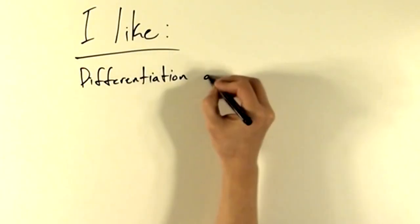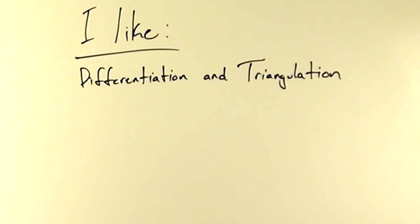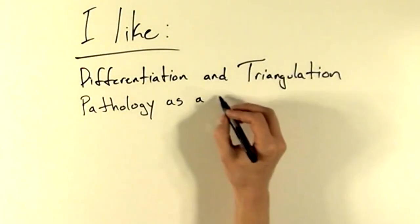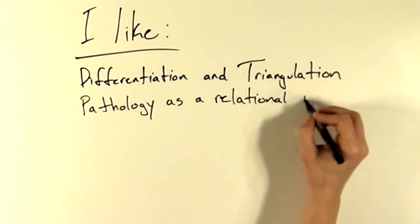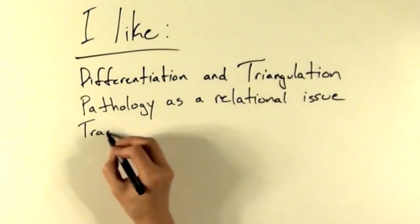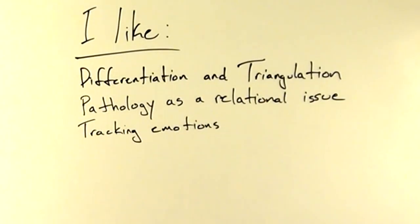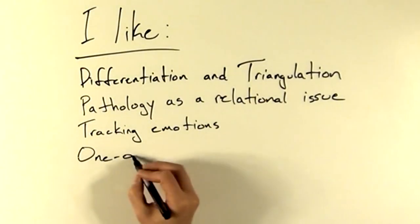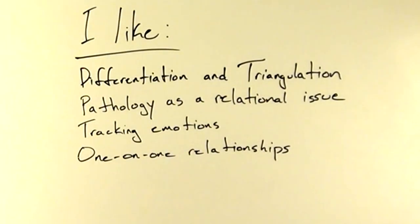What do I like about this approach? I find the concepts of differentiation and triangulation to be extremely useful. I like the way the theory conceptualizes pathology as a relational issue. I like the way it provides a way of tracking emotions as they move through families. I think the idea of establishing a differentiated one-on-one relationship with each member of your family of origin is a very useful idea.